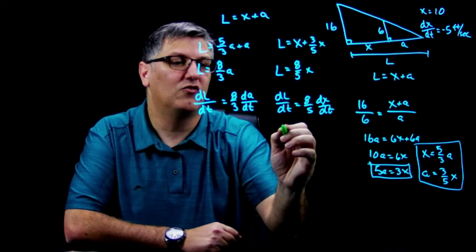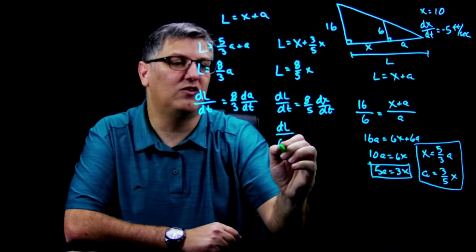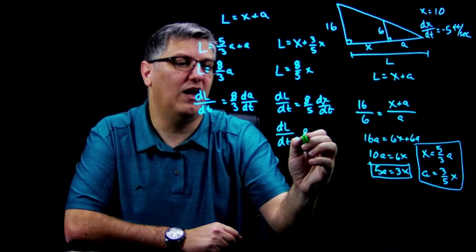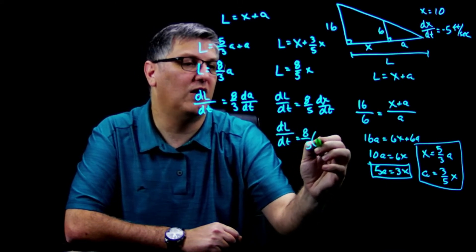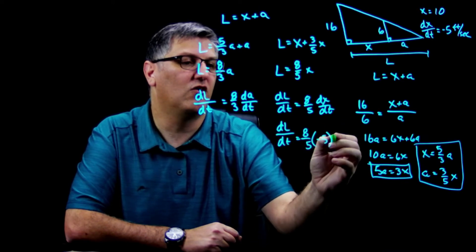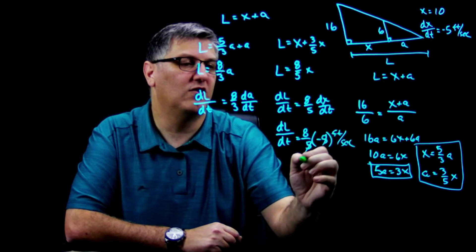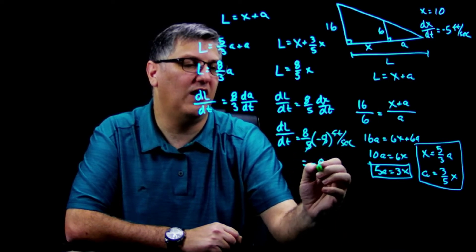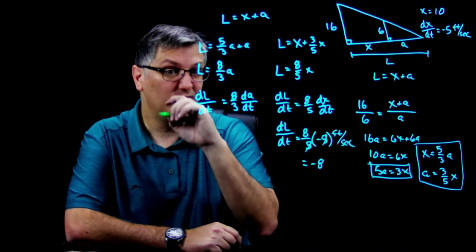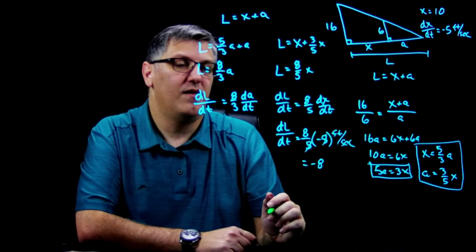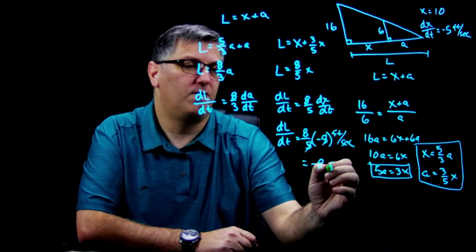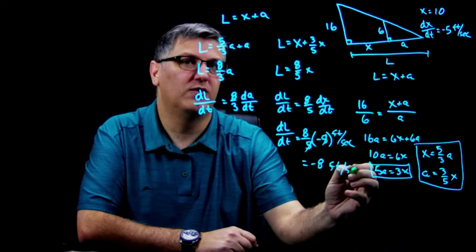So I can say dL/dt equals eight over five times negative five, this is going to be feet per second. This and this cancel, so I end up getting negative eight feet per second.